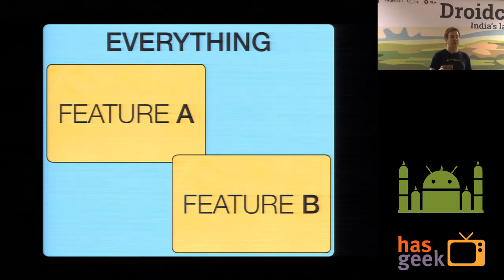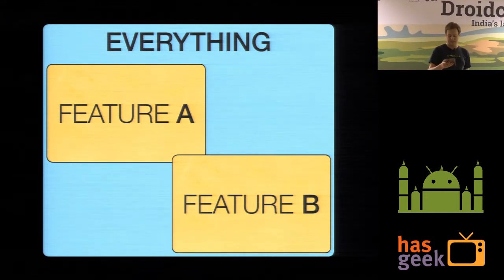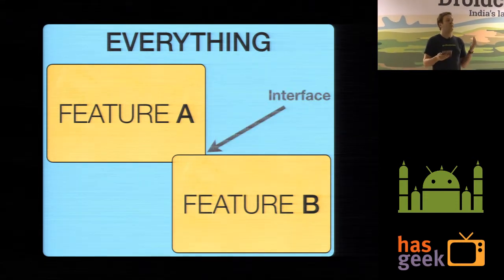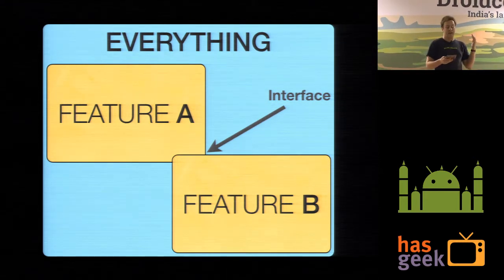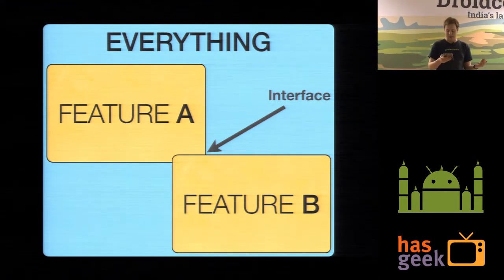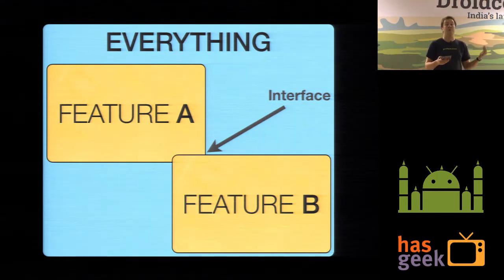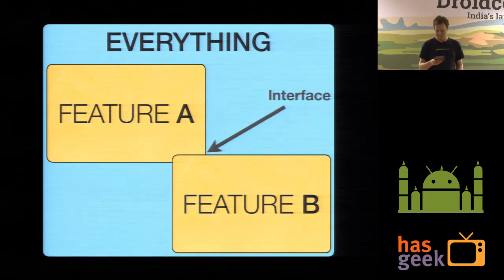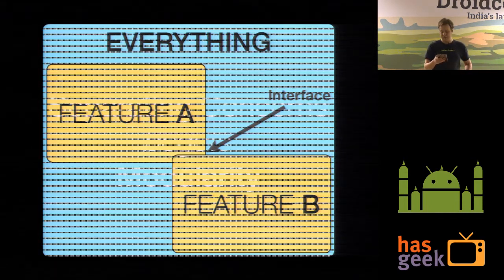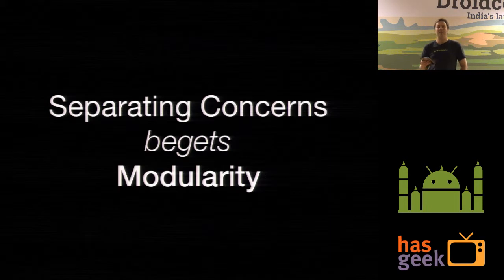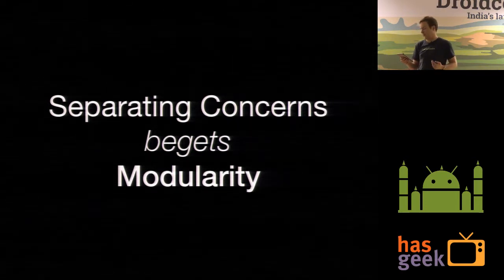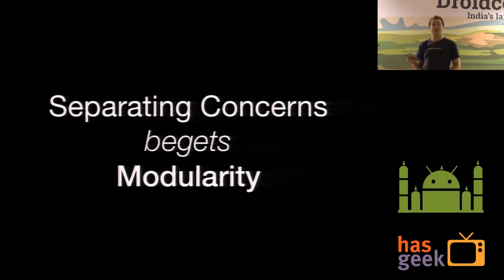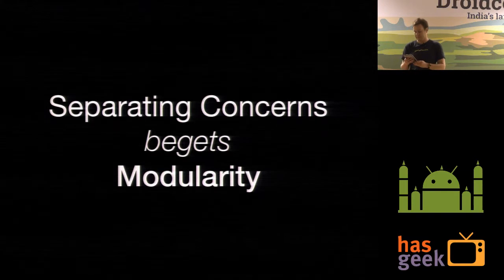The concerns of querying the database and outputting information aren't separated there. An app which does have separation of concerns has several logical units of code joined at a very small point. The point where these two separated concerns meet is called the interface. When you're talking about designing code, this is called the application programming interface, or API. The key observation is that if you have code that exhibits separation of concerns, it is modular.